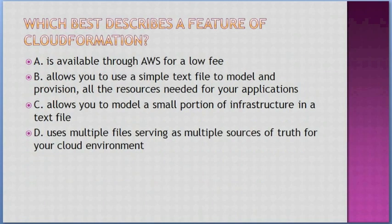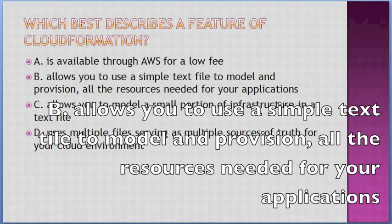Which best describes a feature of CloudFormation? Options: A. Available through AWS for a low fee, B. Allows you to use a simple text file to model and provision all resources needed for your applications, C. Allows you to model a small portion of infrastructure in a text file, D. Uses multiple files serving multiple sources of truth for your cloud environment. Answer: B — allows you to use a simple text file to model and provision all resources needed for your applications.